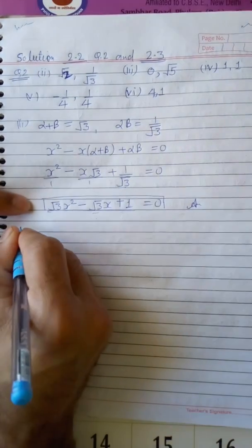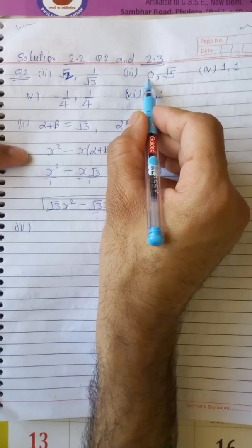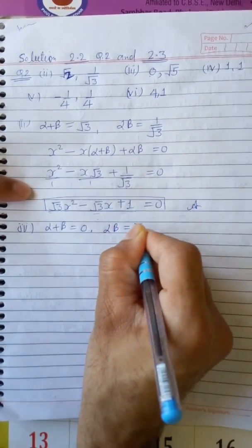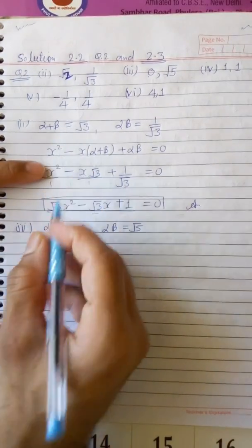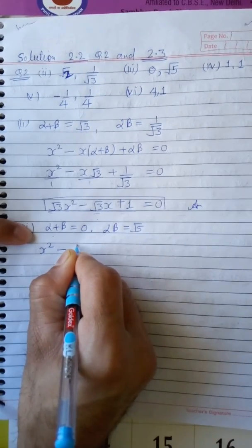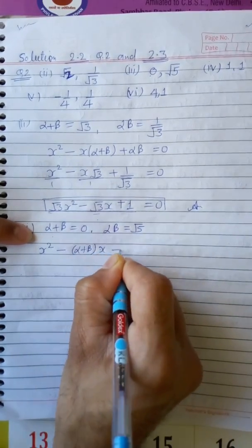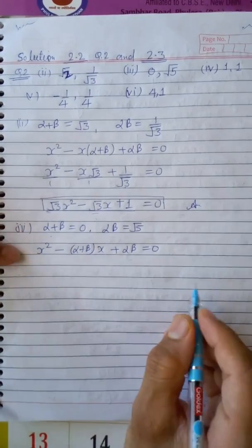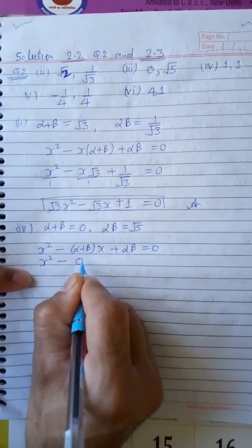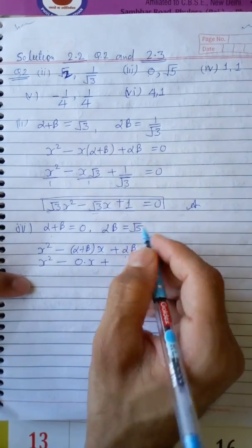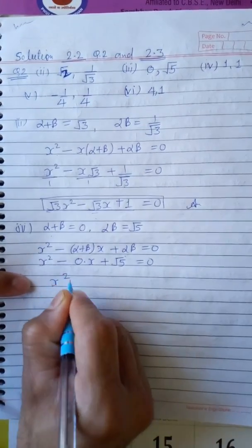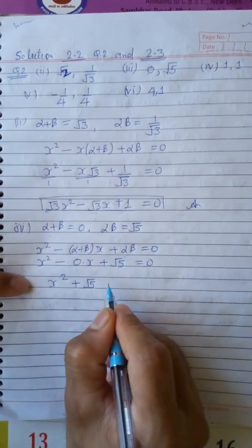Question number 3: alpha plus beta equals 0 and alpha times beta equals root 5. Substituting directly into x squared minus (alpha plus beta)x plus alpha times beta equals 0, we get x squared minus 0 times x plus root 5 equals 0. Since 0 times x is 0, the equation simplifies to x squared plus root 5 equals 0. This is the answer.